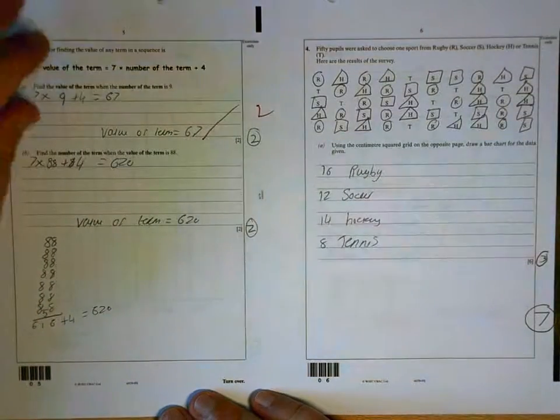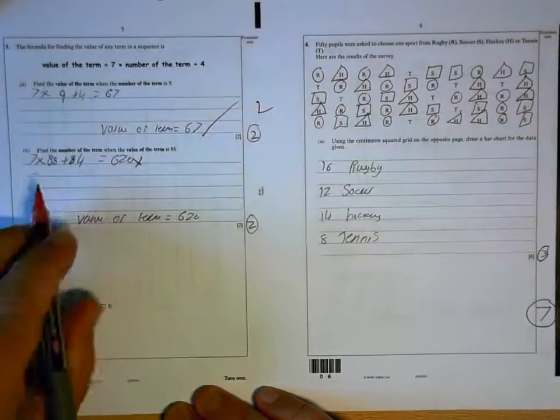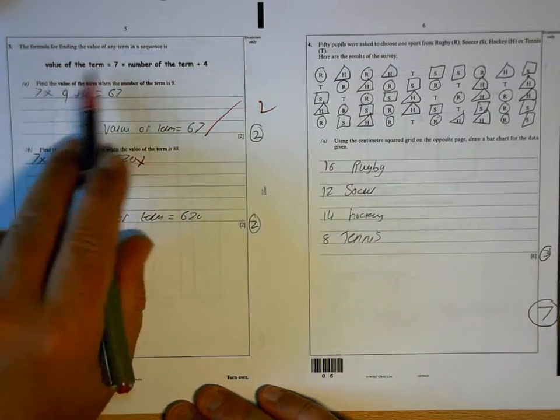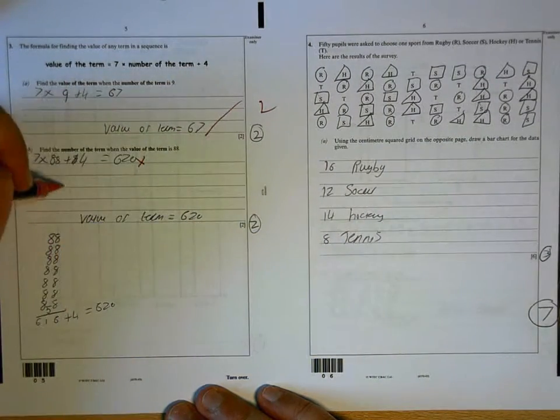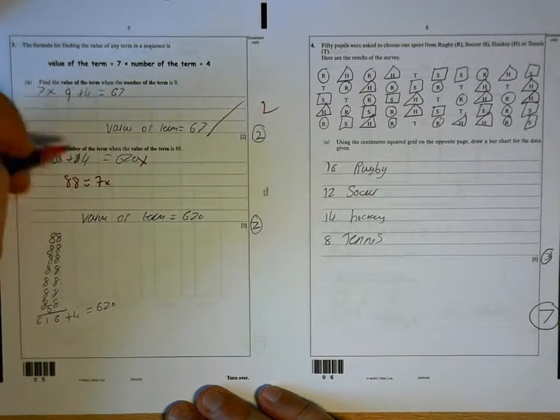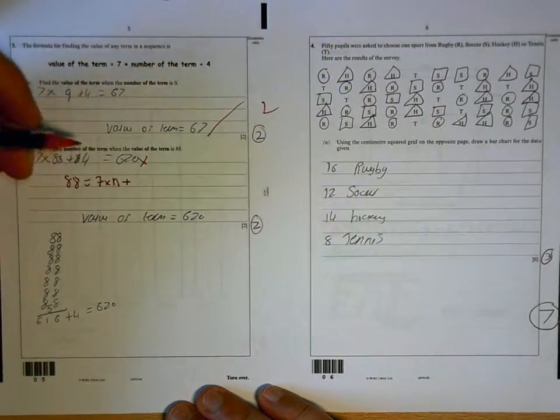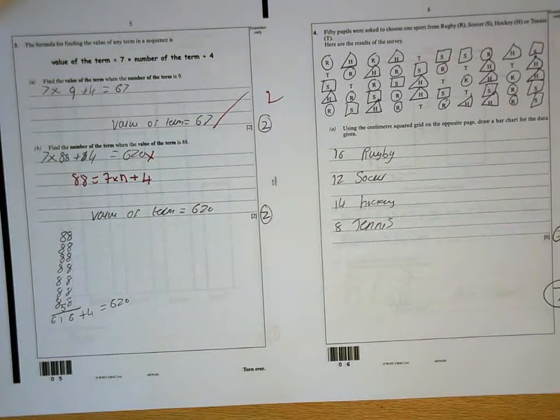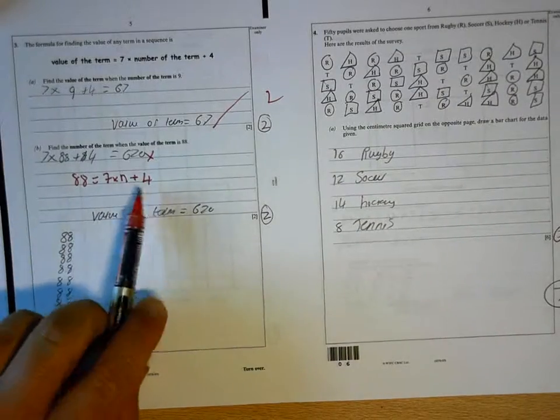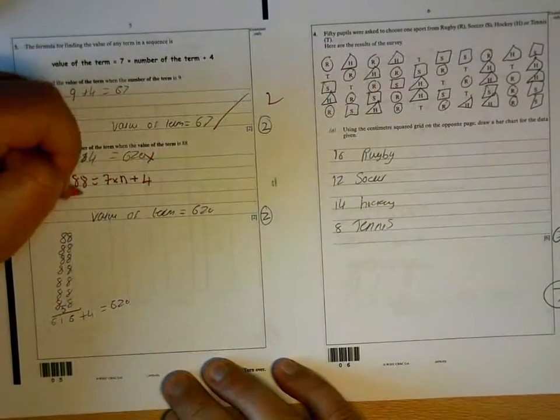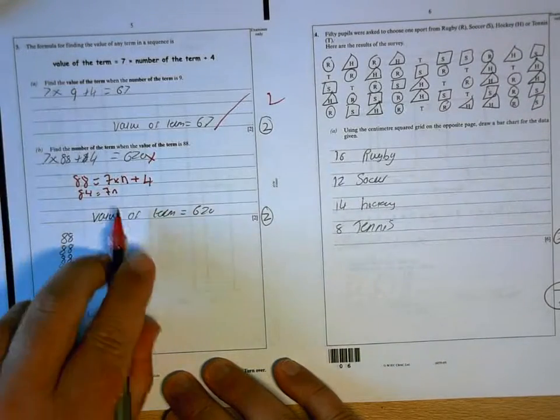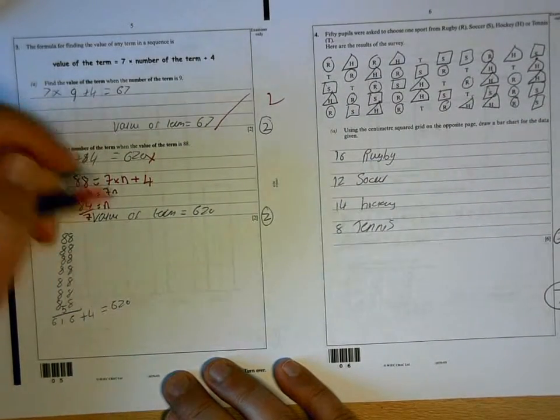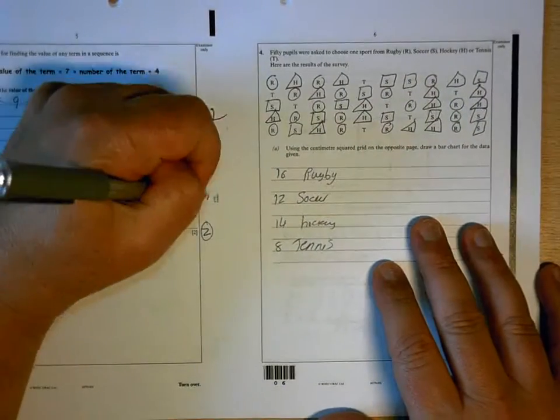67 is correct. This one's wrong. It's not going to ask you to do the same thing that you did there, but with a different number. They're asking you to work out a different thing. So the value is 88. Then it's 7 times the number, which we don't know. I'll call it N, 7N + 4. And that's what you want to work out. So then you solve that like an equation. So first of all, you take 4 off both sides. And then to get to the N, you have to get rid of the times by 7 by dividing by 7. And 84 divided by 7 is 12. So nothing for that second part.